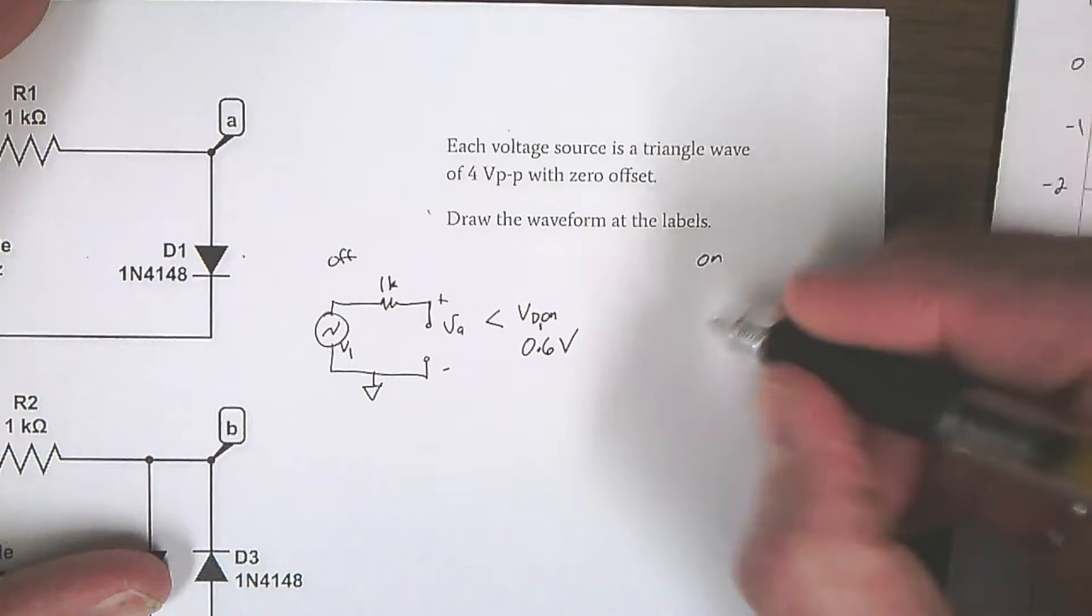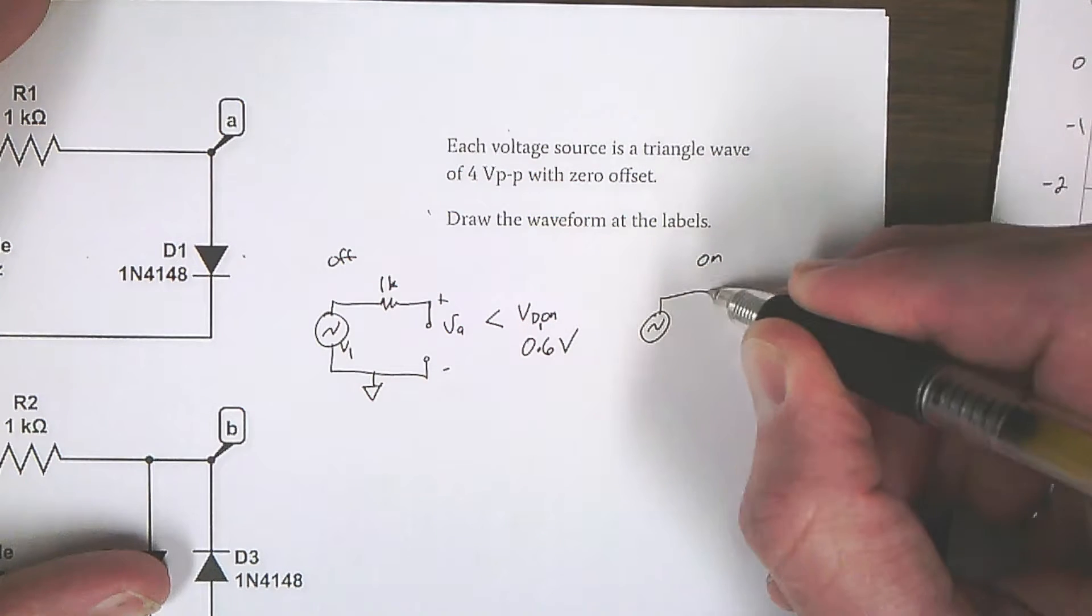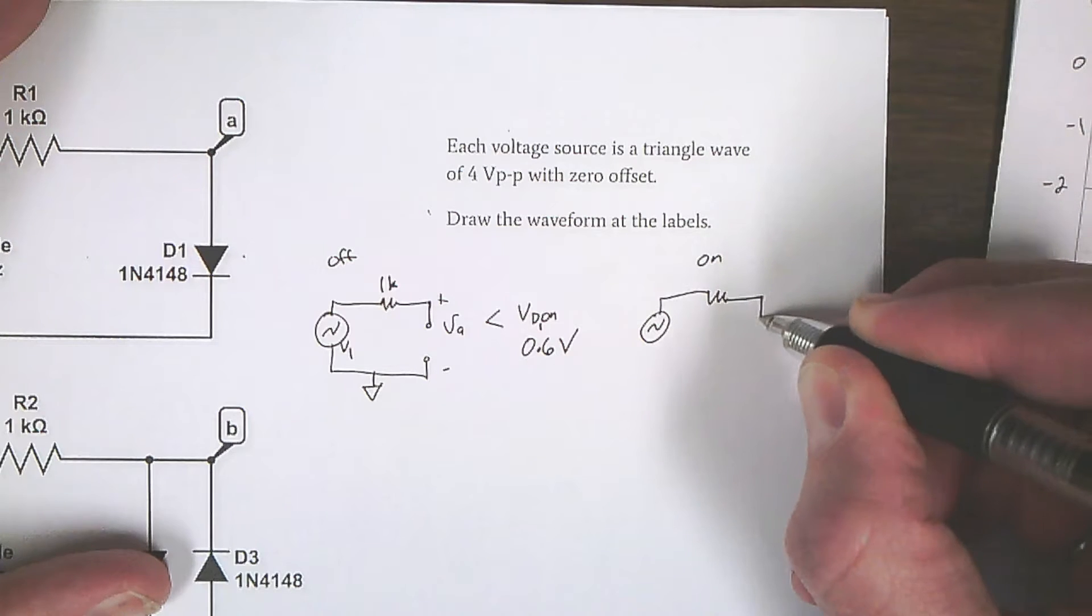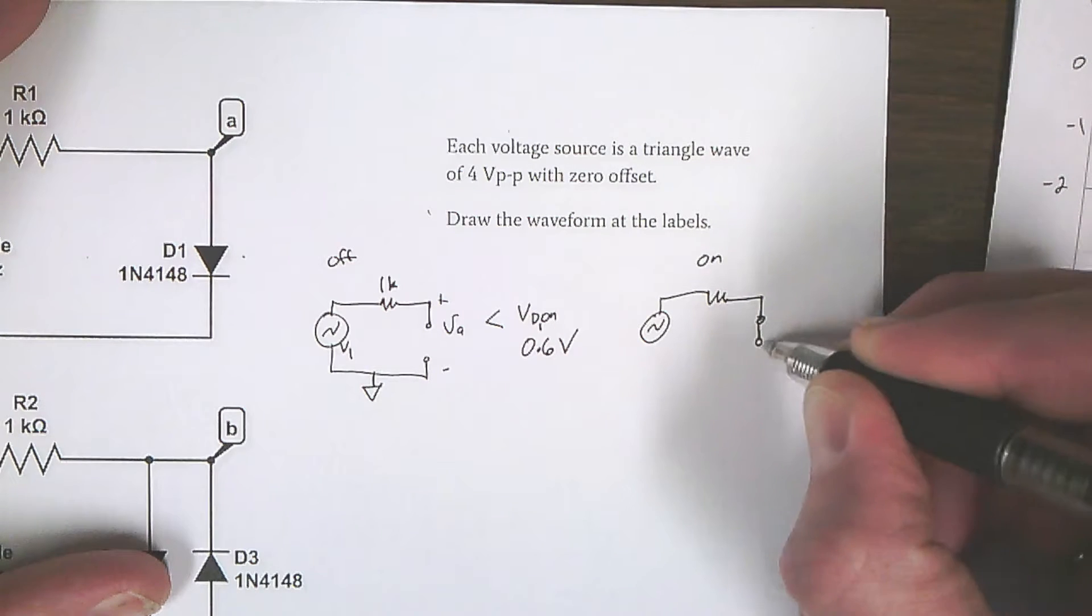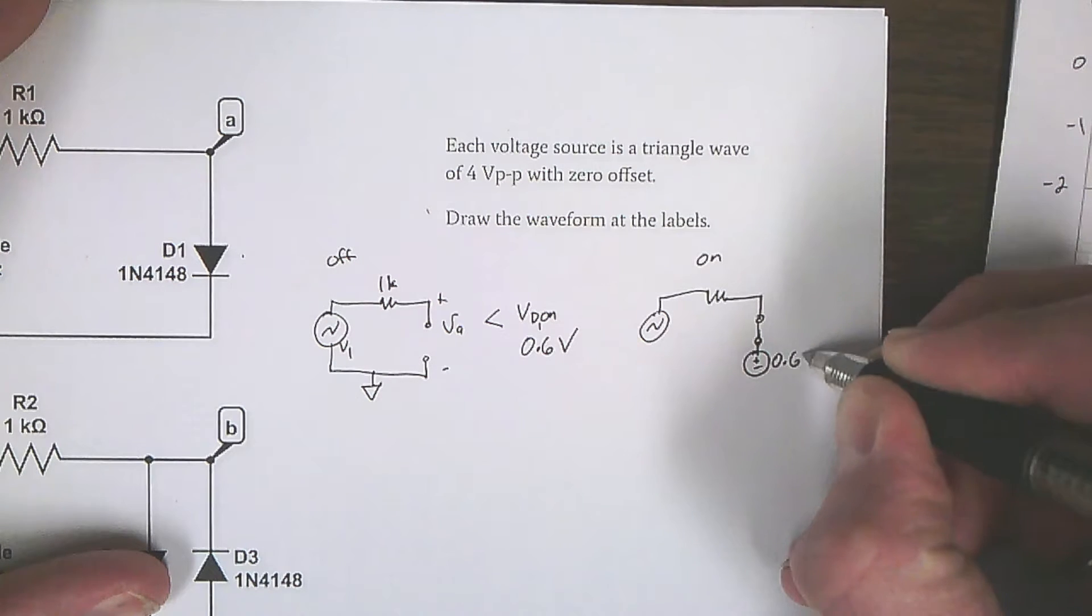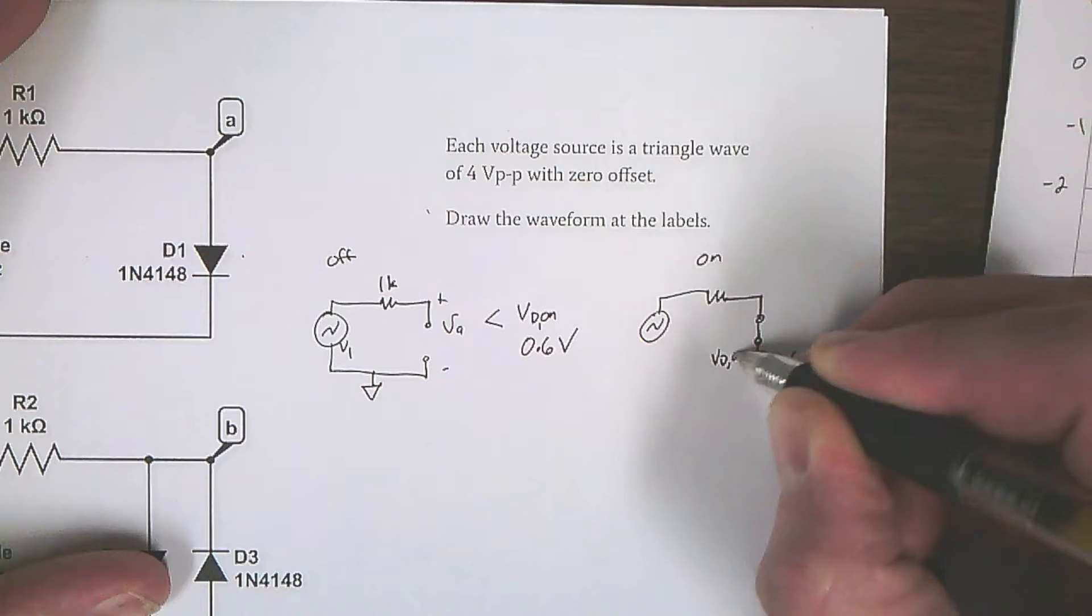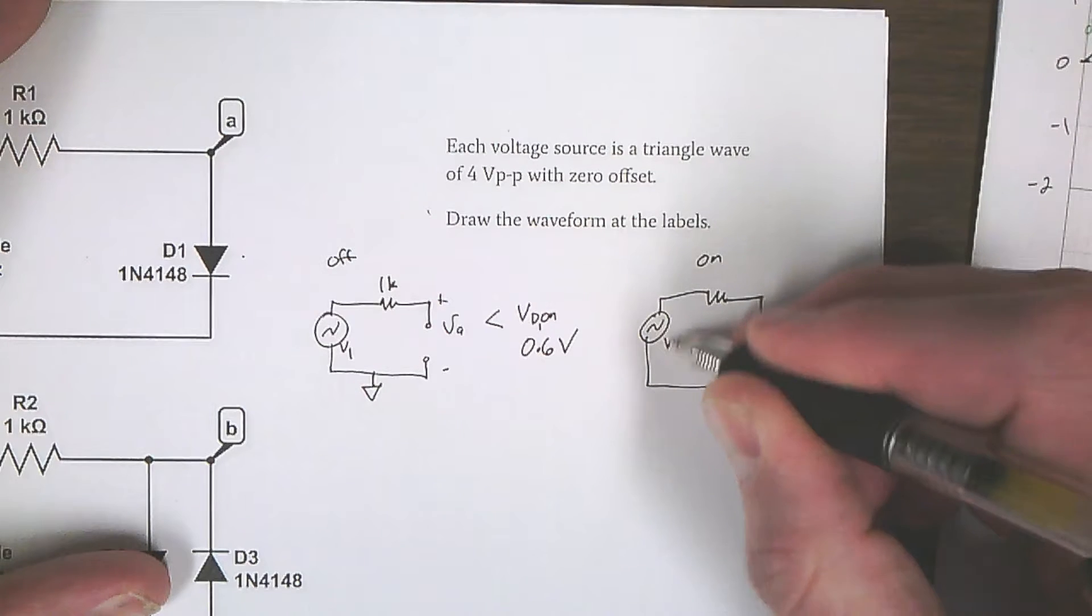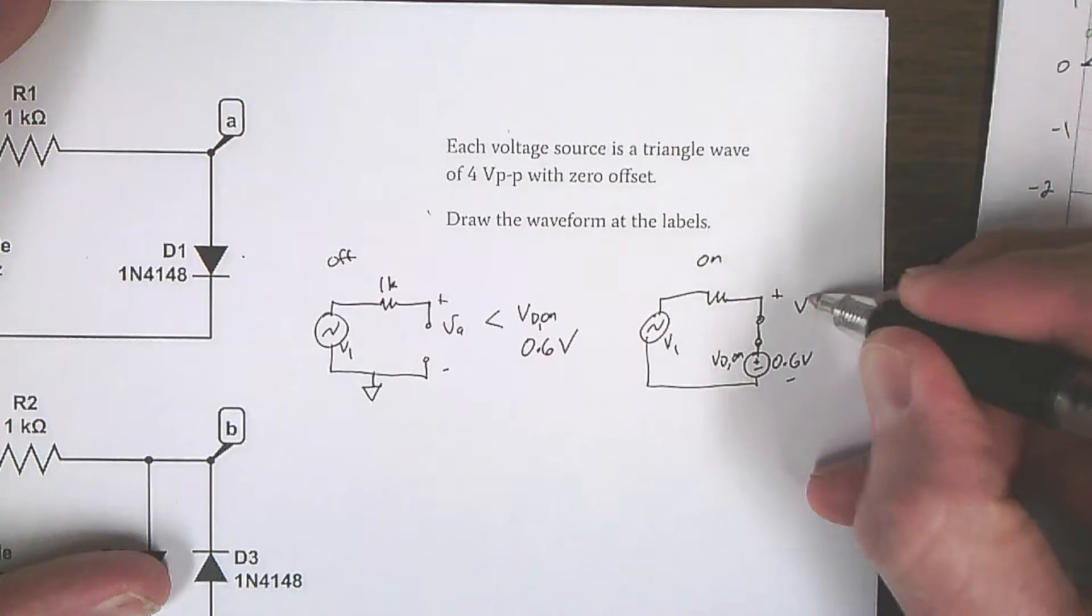If va gets larger than 0.6 volts, then this diode turns on, and we need to switch our guess. Let's just draw the circuit for on. It looks like this, and here's the switch that's on, and a voltage source, 0.6 volts, vd on. There we go, v1, across that is va.